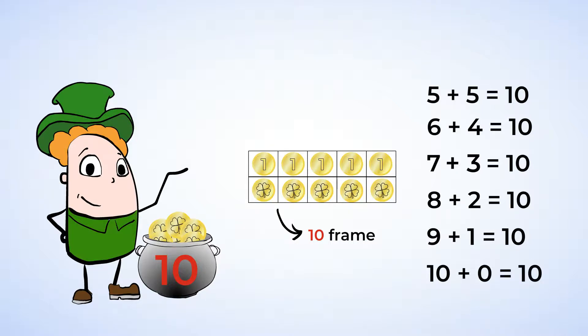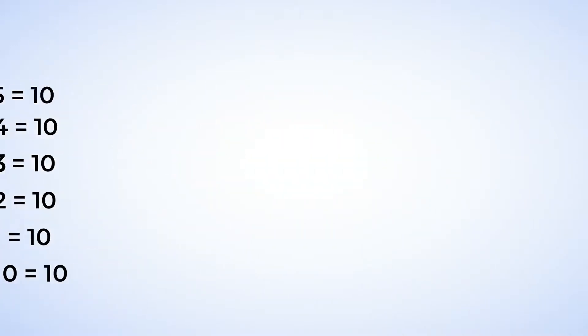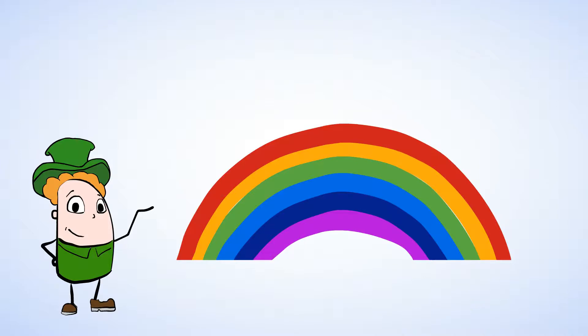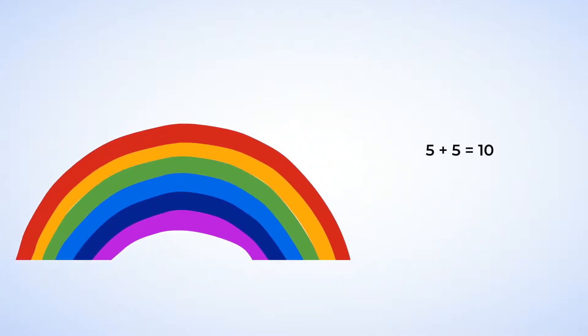Now let's take a look at the number sentences that we wrote. And hey, do you think the leprechaun would let us use its rainbow to help? Now let's start with five plus five, and that makes ten. So let's put a five on each side of the same color on the rainbow. Five plus five equals ten.